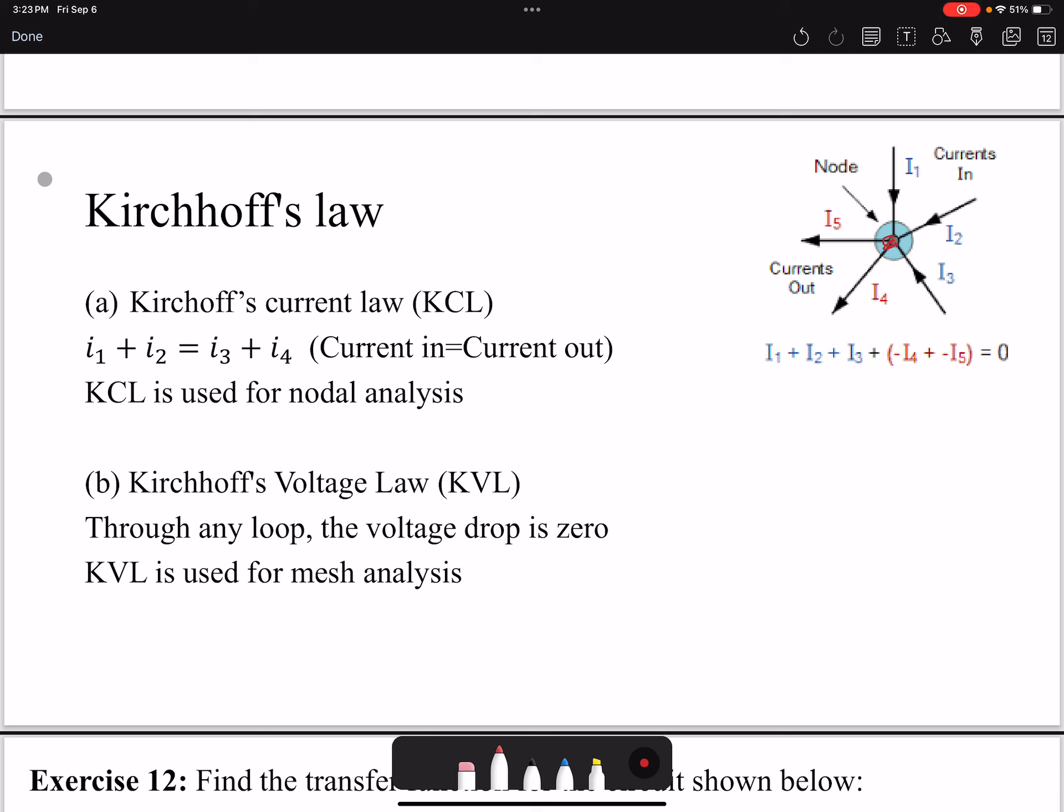To find the unknown, whether it's a current or voltage, we have to use Kirchhoff's law in addition to Ohm's law. We have two main Kirchhoff's laws: the Kirchhoff's current law or KCL, which tells us the current in is equal to the current out for any node, used for nodal analysis. So i1 plus i2 equals i3 plus i4 if you look at this image. Kirchhoff's voltage law is telling us that through any loop, the voltage drop is zero. So we start from one point and then move on into our circuit. KVL is used for mesh analysis. Mesh analysis, as opposed to nodal analysis, we're going to solve problems to better reinforce the concept of Kirchhoff's law.